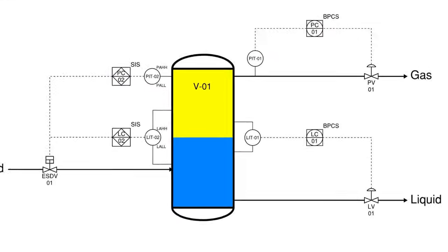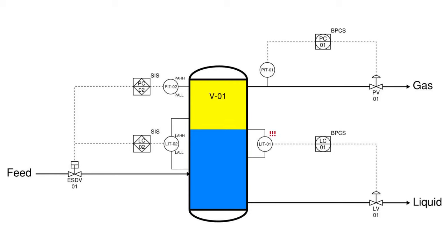If the level increases and is higher than the desired setpoint of the controller, then LC-1 will send the signal which will cause LV-1 to open more, allowing more liquid to flow out of V-1.